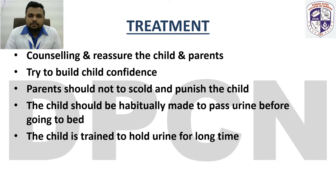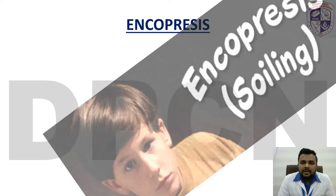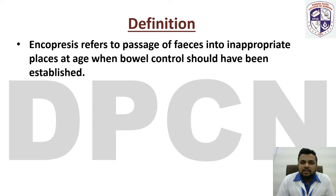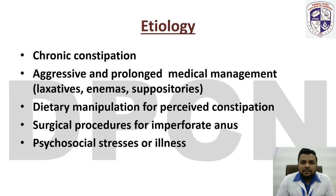The second disorder is encopresis. Encopresis refers to the passage of feces into inappropriate places at the age when bowel control should have been established. Etiology includes chronic constipation, aggressive and prolonged medical management such as use of laxatives, enemas, or suppositories, dietary manipulation for perceived constipation, surgical procedures for imperforate anus, and psychological stress.